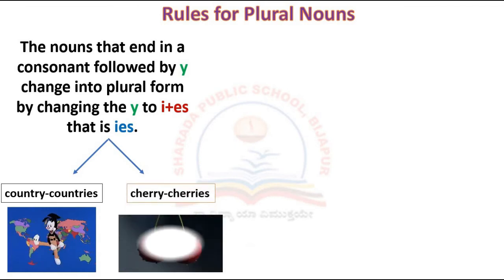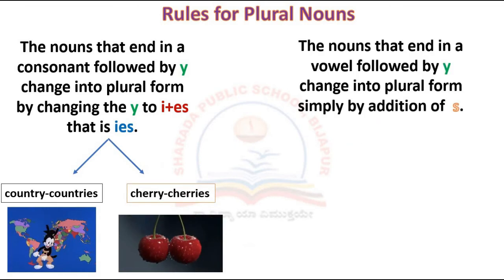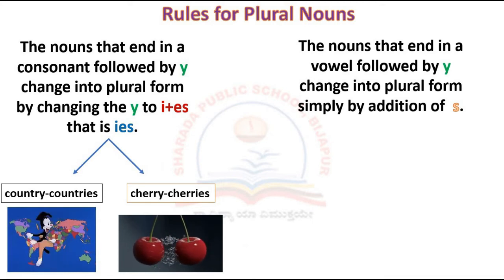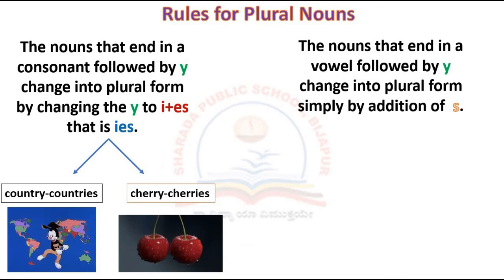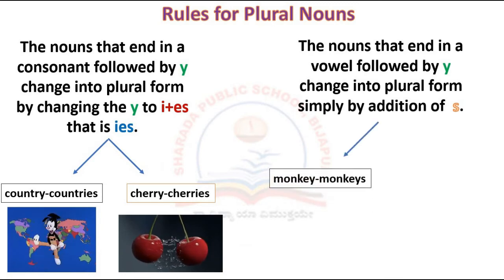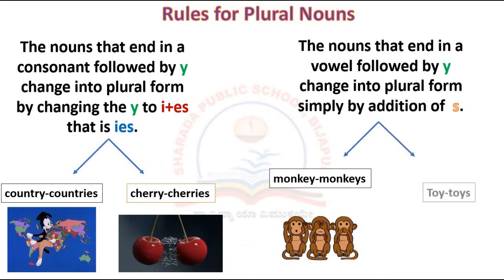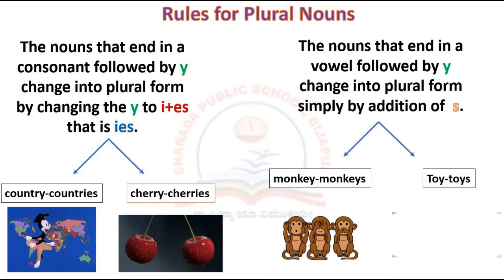Cherry becomes cherries. Nouns that end in a vowel followed by 'y' change into plural form simply by the addition of 's'. For example, monkey becomes monkeys, toy becomes toys.